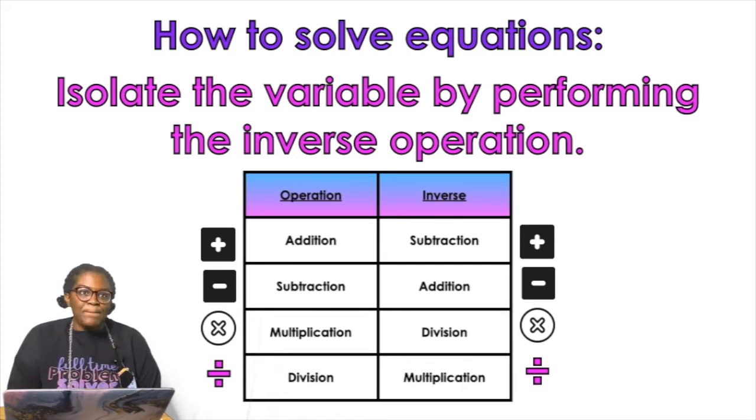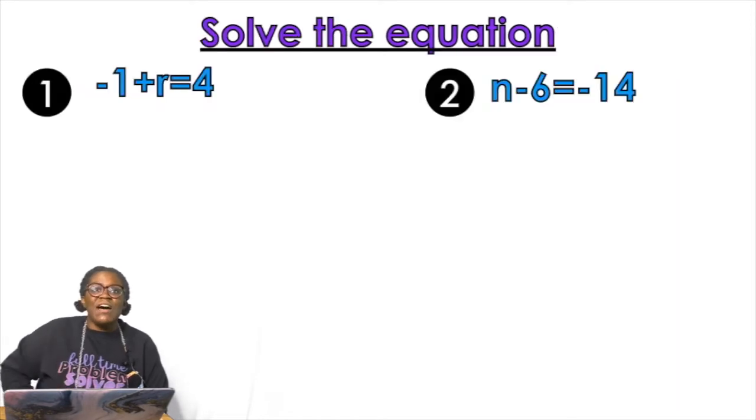The inverse of a log is to exponentiate. Like this is going to be forever. So let's get comfortable. Anyway so solve the equation, negative one plus r equals four. What we need to do is we need to get rid of that negative one.